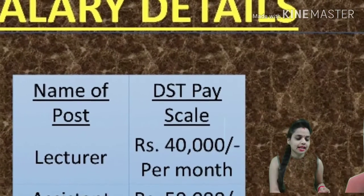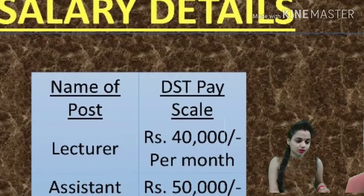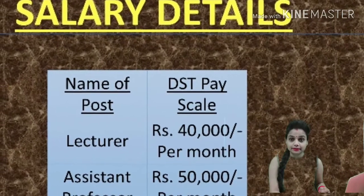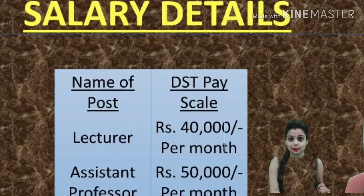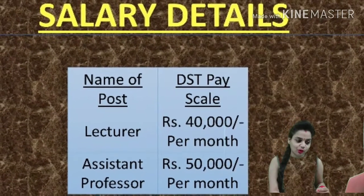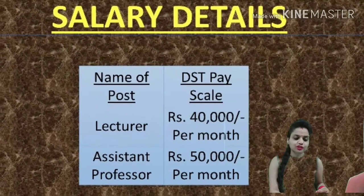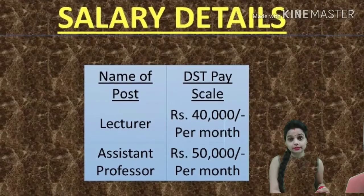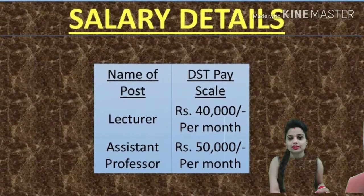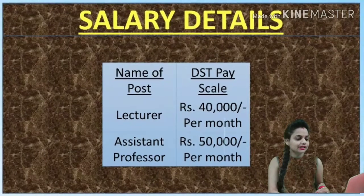Regarding salary details: the Lecturer post offers 40,000 per month - a very impressive salary. The Assistant Professor post offers 50,000 per month. So that covers the qualification and salary details.